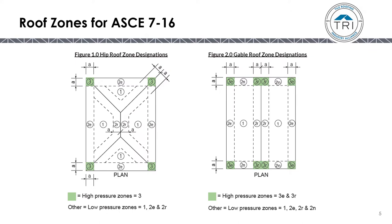In Figure 1, hip roof, you'll see four different zones: Zone 1, Zone 2E, Zone 2R, and Zone 3. In Figure 2, gable roofs, you'll see six distinct zones. In the manual, these zones are divided into either a low-pressure zone or a high-pressure zone. In the hip roof, the low-pressure zones are everything other than Zone 3; the high-pressure zone is Zone 3, just the corners. On a gable roof, the high-pressure zones are 3E and 3R, and the low-pressure zones are 1, 2E, 2R, and 2N.